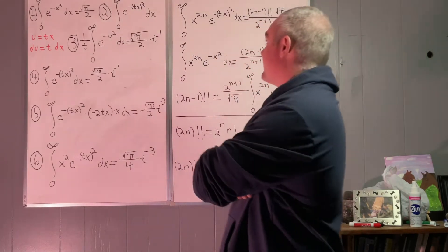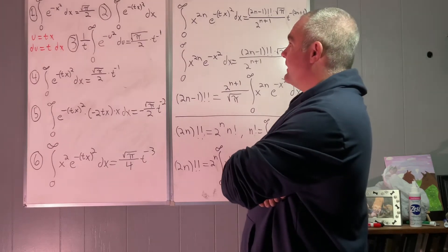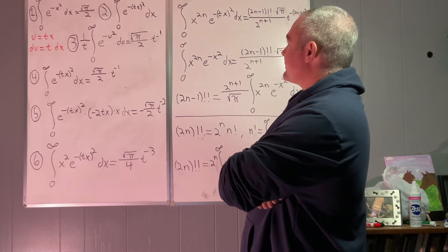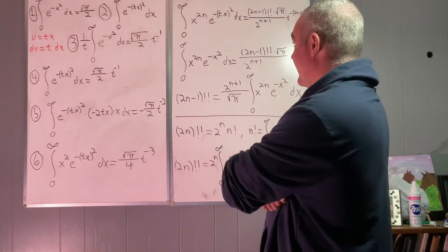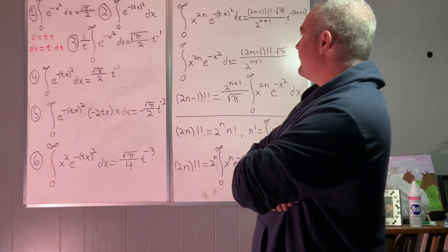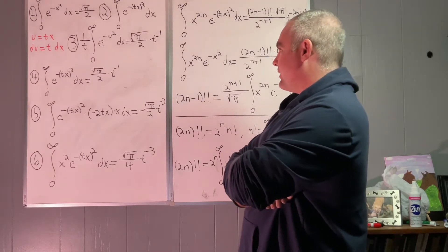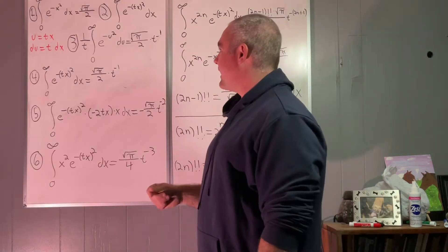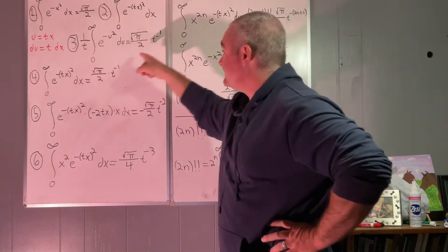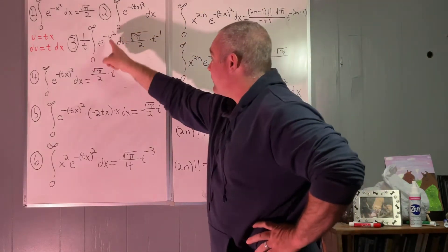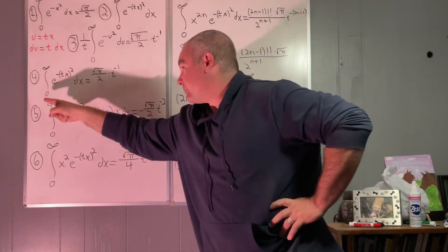In step number 2, we want to create a function of t that closely resembles our original integral. We put a t in front of x and square the whole thing, giving the integral from zero to infinity of e to the negative tx squared dx. To evaluate that integral, we make the substitution u equals the square root of t times x, and du equals the square root of t dx, and we arrive at the result: this integral equals the square root of pi over 2 times t to the negative one-half.